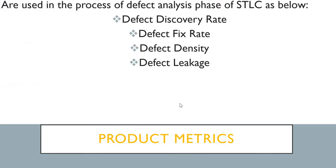Next are product metrics. Product metrics are used in the process of defect analysis phase of the software test lifecycle. The metrics listed under product metrics are: defect discovery rate, defect fix rate, defect density rate, and defect leakage rate. Let's go through them one by one — starting with defect discovery rate.